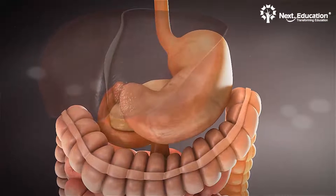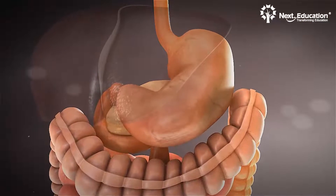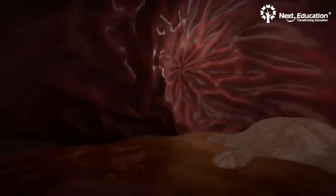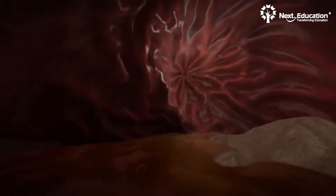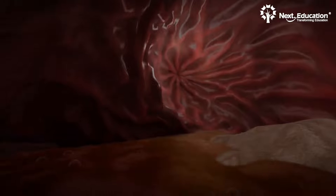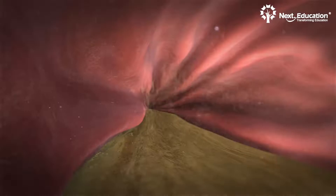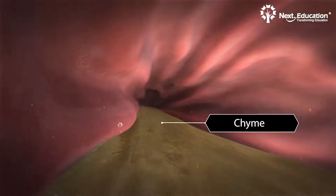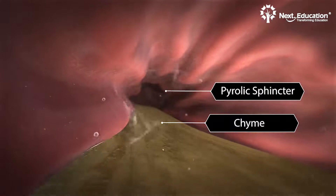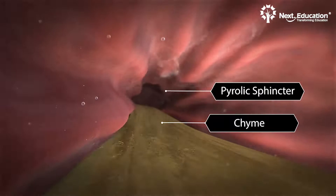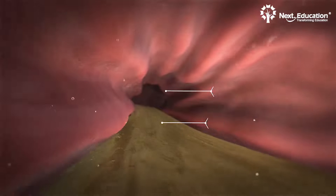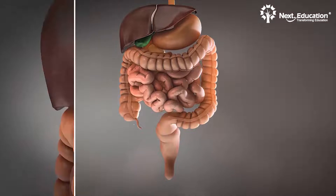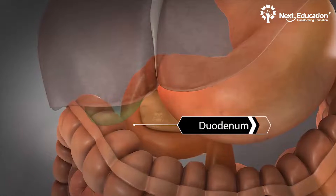Along with the enzymatic action, the muscular walls of the stomach churn and mix the bolus thoroughly with gastric juices to transform it into a thick pulp called chyme. Then the pyloric sphincter of the stomach opens and transfers the chyme to the first part of the small intestine called the duodenum.